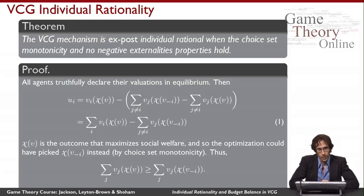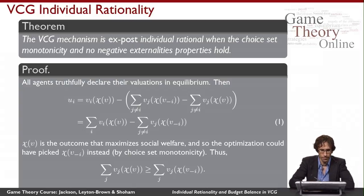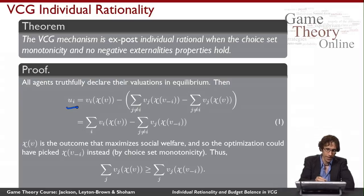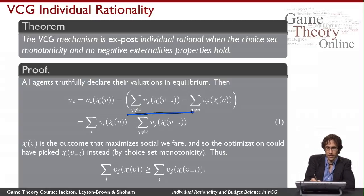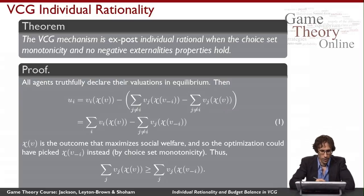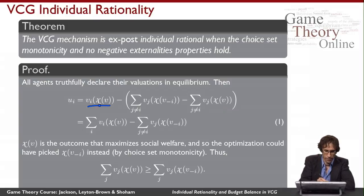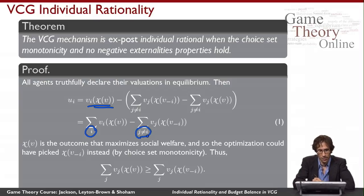Here's how we prove it. All agents truthfully declare their valuations in equilibrium. We write agent i's utility for participating: he gets his value for the allocation VCG actually makes given truthful reporting, and then pays the VCG payment function. Because everyone reports truthfully there are no V-hats anywhere. Collecting terms, I get a sum over all agents minus a sum over all agents except i.